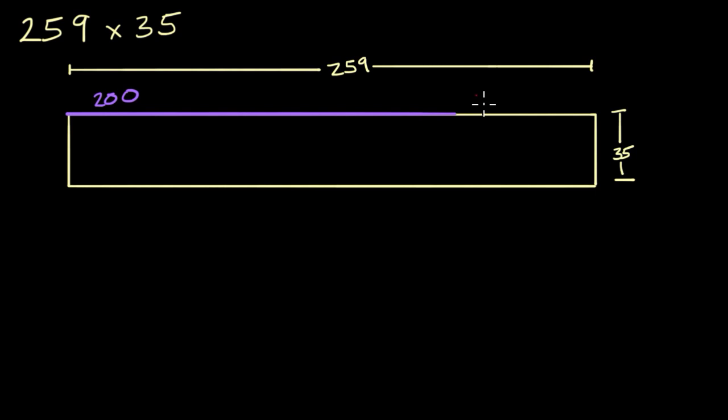And then the 50 would be about that much of it. And then the 9, I'll do this in a new color, might be that much of it. So 259 is the same thing as 200 plus 50 plus 9.